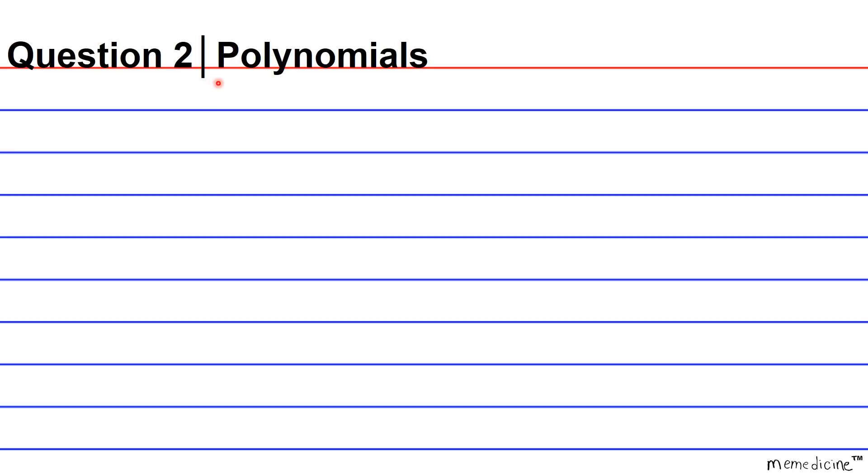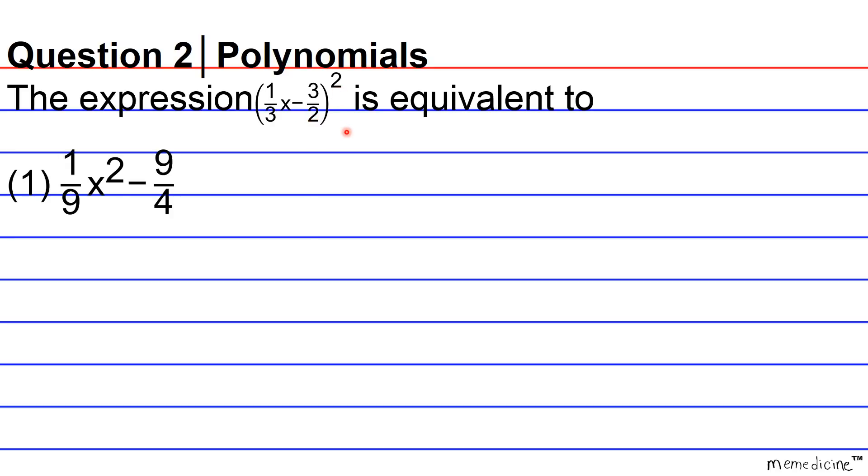Question 2, Polynomials. The expression (1/3x - 3/2) squared is equivalent to: 1, 1/9x² - 9/4, 2, 1/9x² + 9/4.